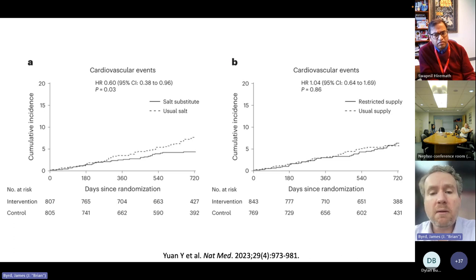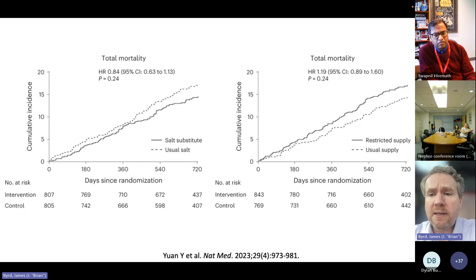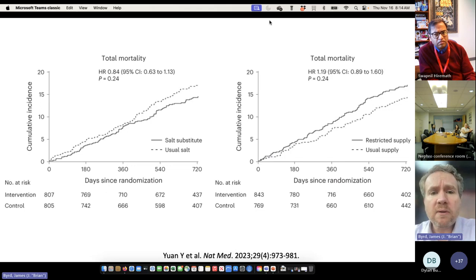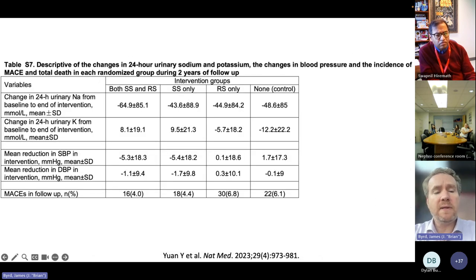Total mortality showed some trend toward being reduced in the salt substitute arm and was not reduced by restricted salt supply. But the last table in their supplement shows that the change in 24-hour urinary sodium for baseline to the end of the intervention in the salt substitute arm was minus 43.6 millimoles per liter, in the restricted salt arm was minus 44.9, and in the control arm was minus 48.6. So I get the impression that their restricted salt intervention was just an utter failure.